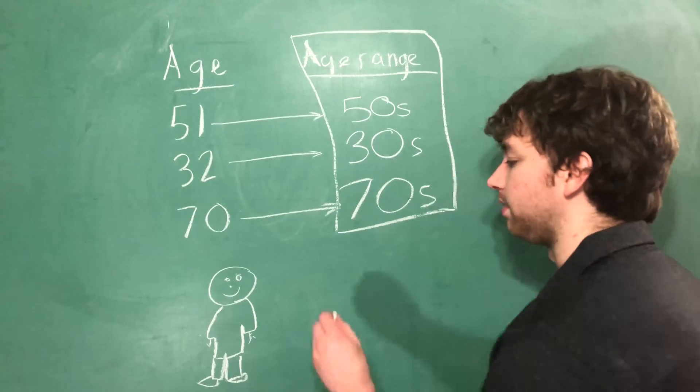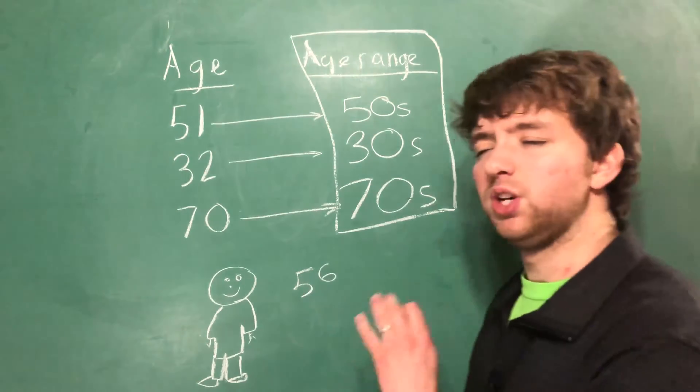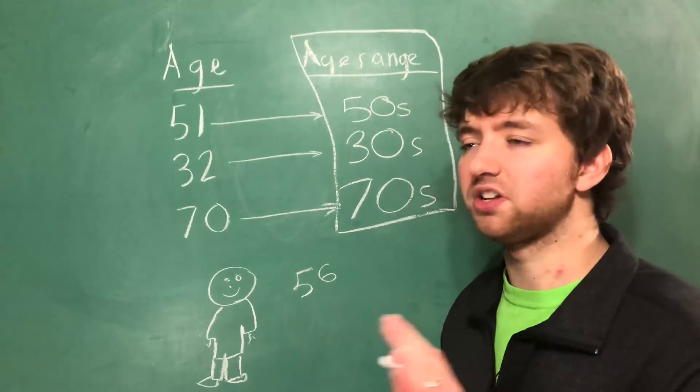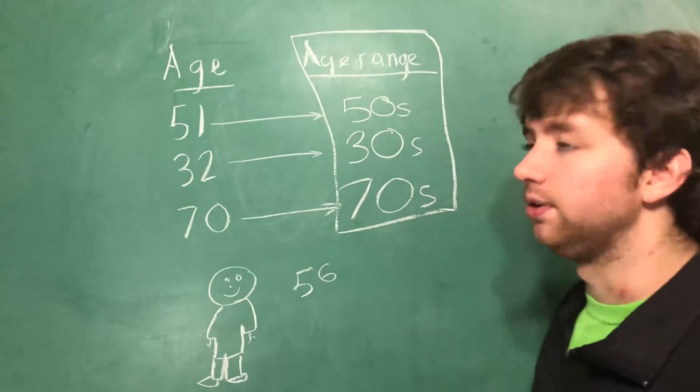To drive this home one more time, if we just left it at 56 well then the only thing that we could really do is look at 56 year olds. What is their chance of having diabetes? That is much harder to do and not nearly as effective.